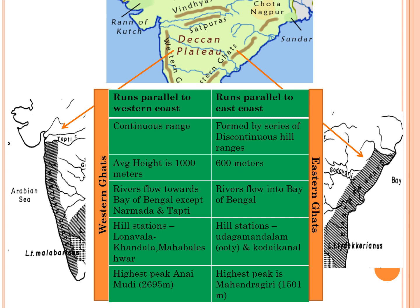Rivers rising on the western slopes of the Western Ghats are short turbulent streams flowing over the steep western face into the Arabian Sea. Major hill stations in the Western Ghats are Lonavala, Khandala and Mahabaleshwar. The highest peak in the Western Ghats is Anamudi, which is about 2695 meters. The Eastern Ghats run parallel to the east coast and are found as a series of discontinuous hill ranges with gaps through which the rivers of the peninsular region flow into the Bay of Bengal. The average height of the Eastern Ghats is about 600 meters. Important hill stations in the Eastern Ghats are Udagamandalam, also known as Ooty, and Kodaikanal. The highest peak in the Eastern Ghats is Mahendragiri, which is about 1501 meters.